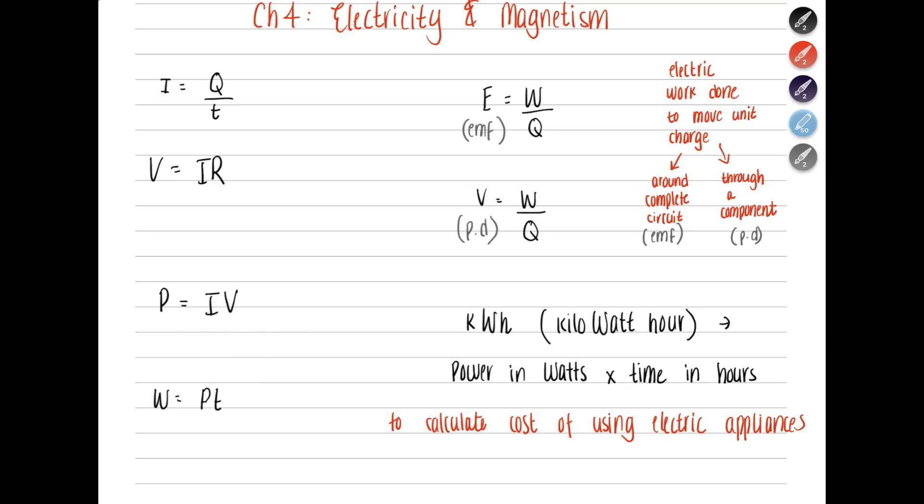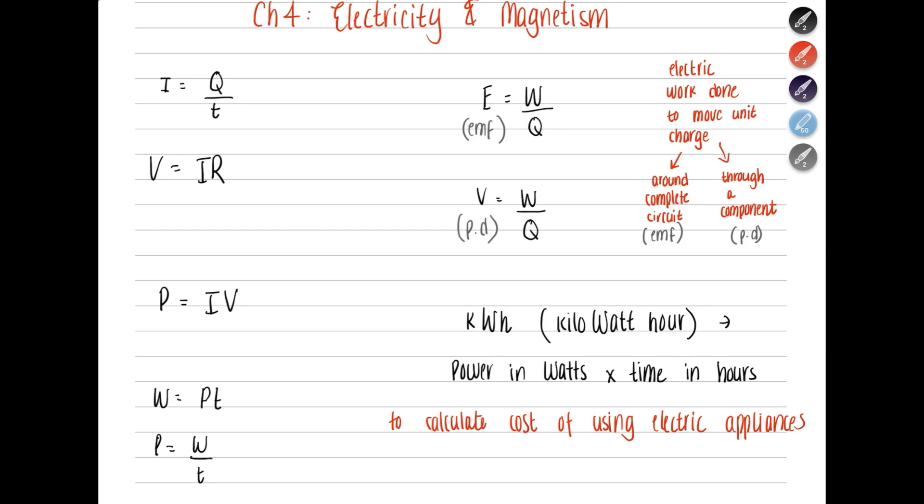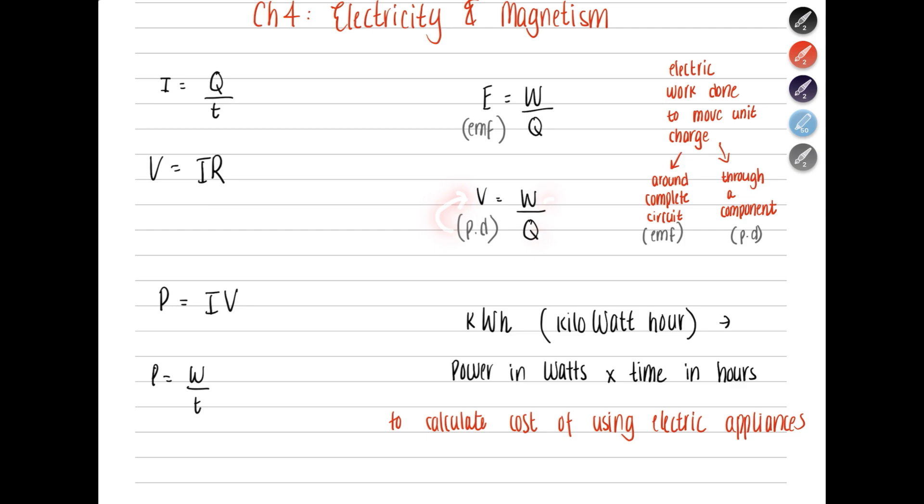Then, work equals power multiplied by time. Because power is basically work done per unit time. On the other side, you have the equations for EMF and potential difference. Basically, the electric work done to move unit charge. If you are moving that unit charge around the whole circuit, you are getting EMF. If you are just moving it through a component, for example, a resistor or a voltmeter, that is called the potential difference. The formula is the same, but the symbol is different. EMF has a symbol of E, which is work done per charge. And a potential difference has the symbol of V, which is work done per charge.